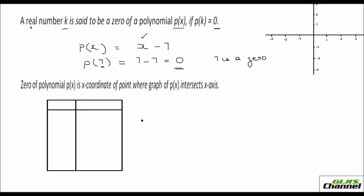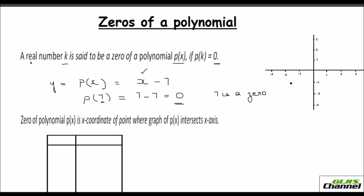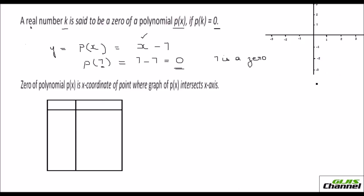To make it even more clear, we can take p of x as y. To show it geometrically, let us represent the y-axis for p of x, and the polynomial x minus 7, the result we are going to show on the x-axis. So here, I can give different values for x, and your y equals x minus 7.